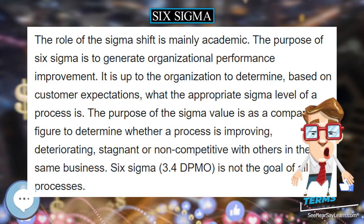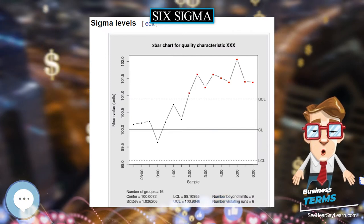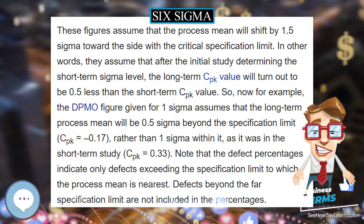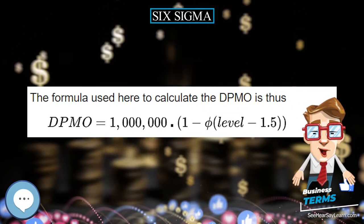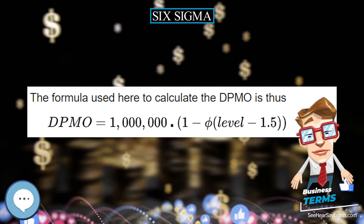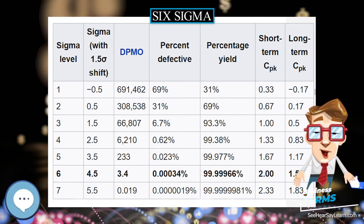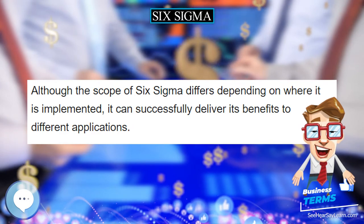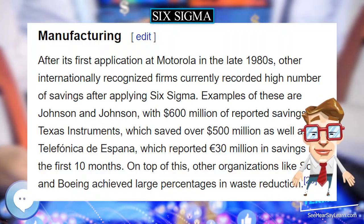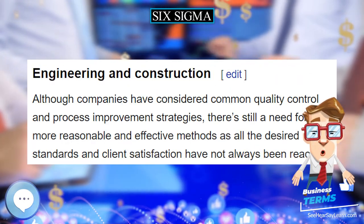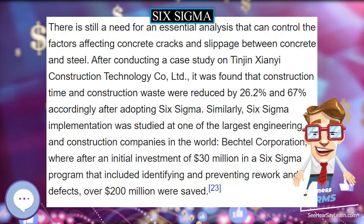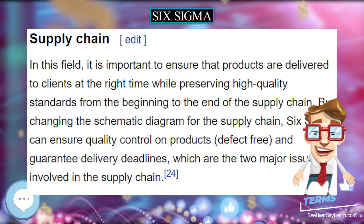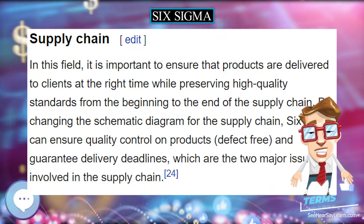Six Sigma has played an important role in finance by improving accuracy of allocation of cash to reduce bank charges, improving accuracy of reporting, reducing documentary credits defects, reducing check collection defects, and reducing variation in collector performance. Bank of America increased customer satisfaction by 10.4% and decreased customer issues by 24% by applying 6 Sigma tools. American Express successfully eliminated non-received renewal credit cards and improved their overall processes by applying 6 Sigma principles. Other financial institutions such as GE Capital Corporation, JPMorgan Chase, and SunTrust Bank are also applying this strategy.